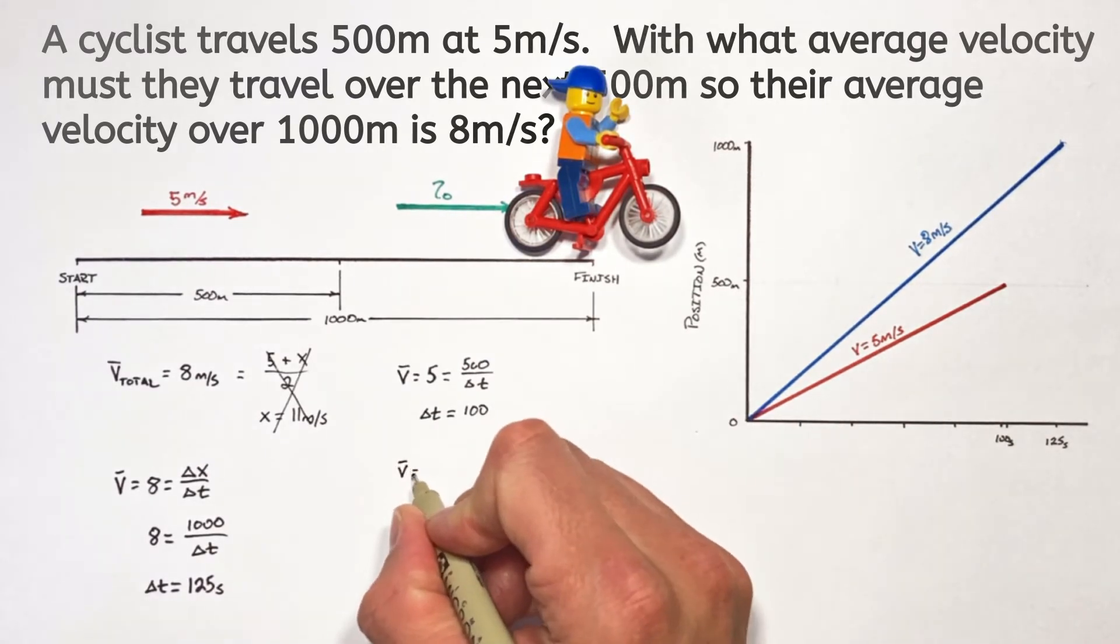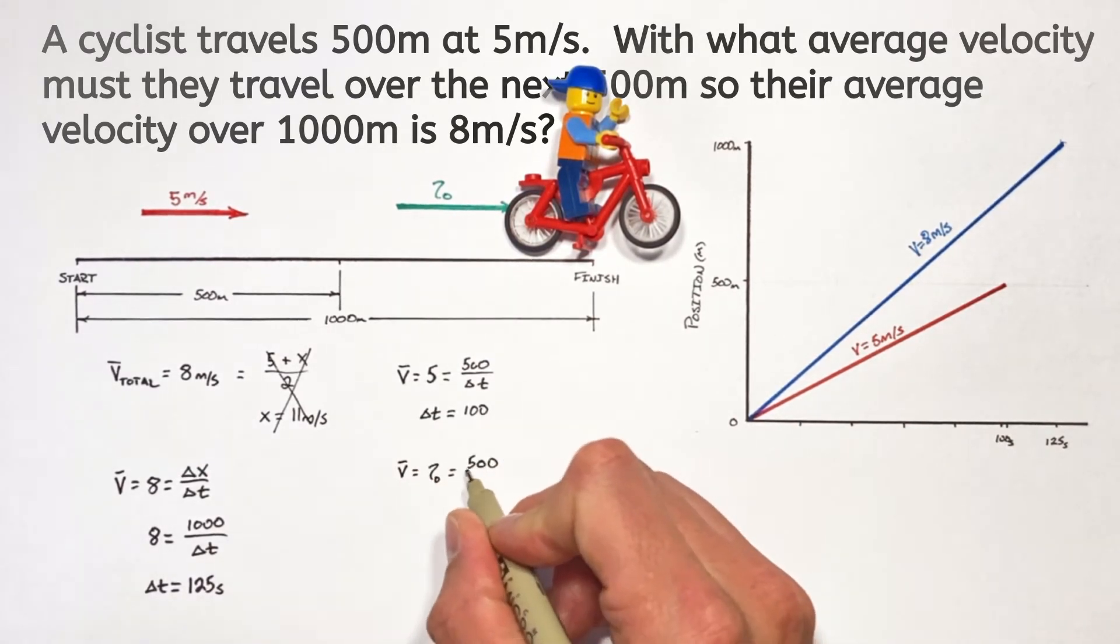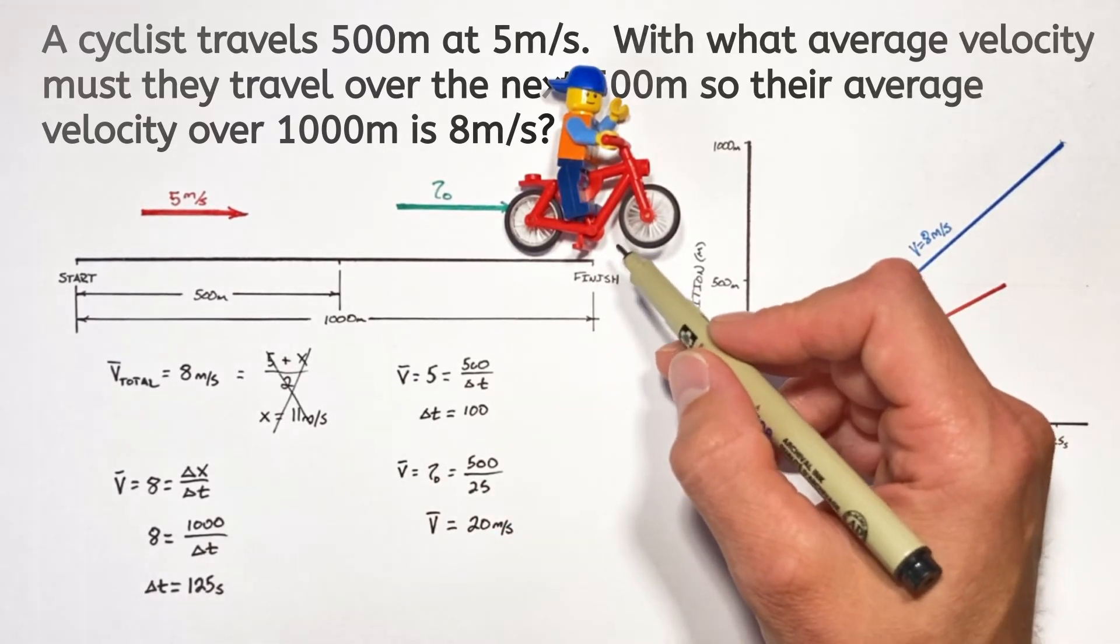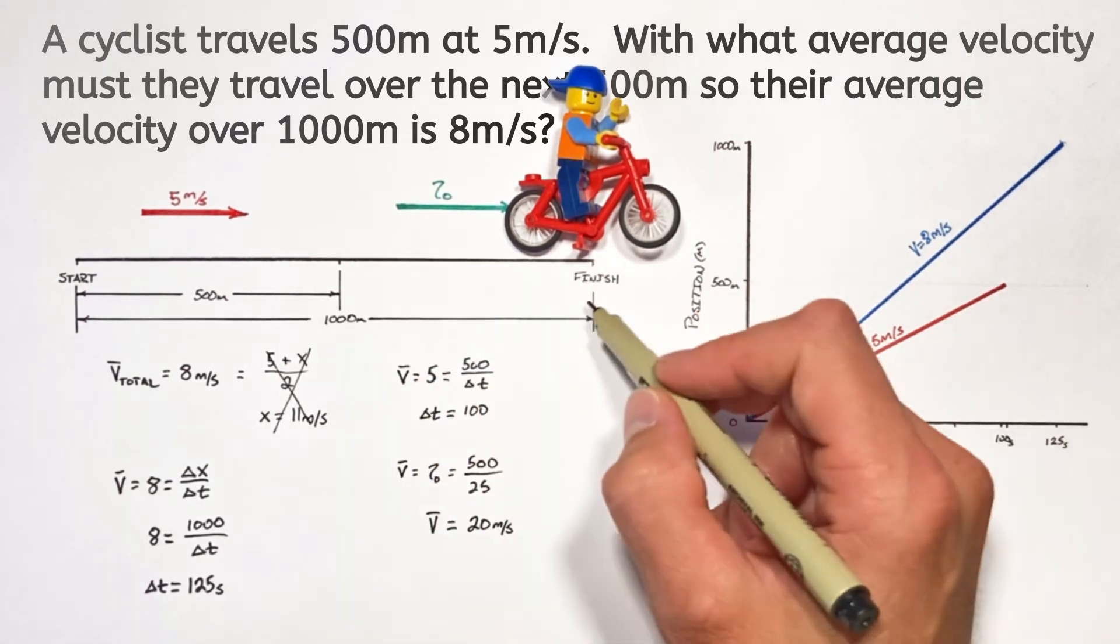And if you do the math on that, our little guy's got to go 500 meters in only 25 seconds. We find our little dude's got to go 20 meters per second over the last 500 meters.